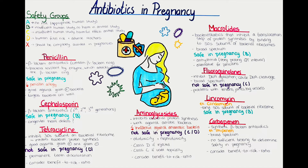Some examples of drugs in the X category are atorvastatin and simvastatin, which are common cholesterol-lowering agents, as well as methotrexate. Methotrexate is an immunosuppressant and is another example of a drug in the X category.